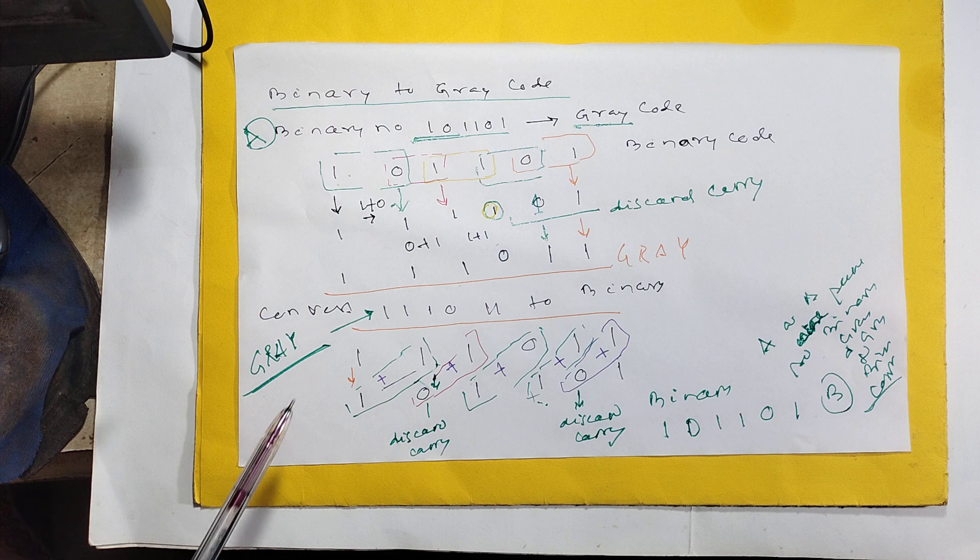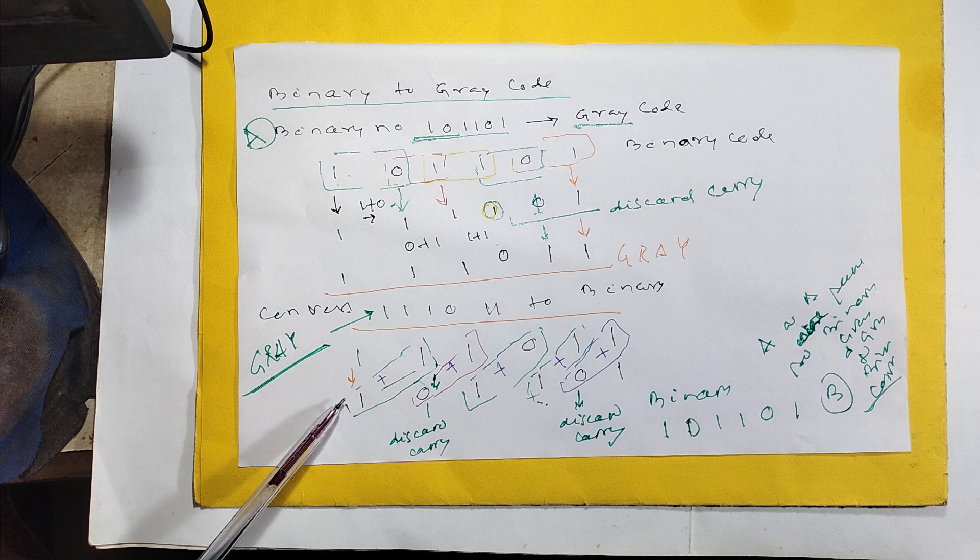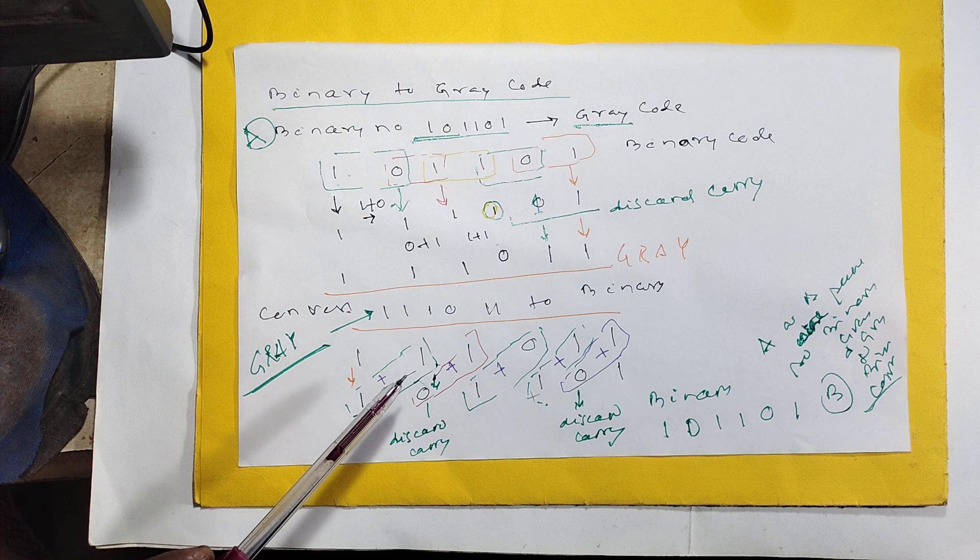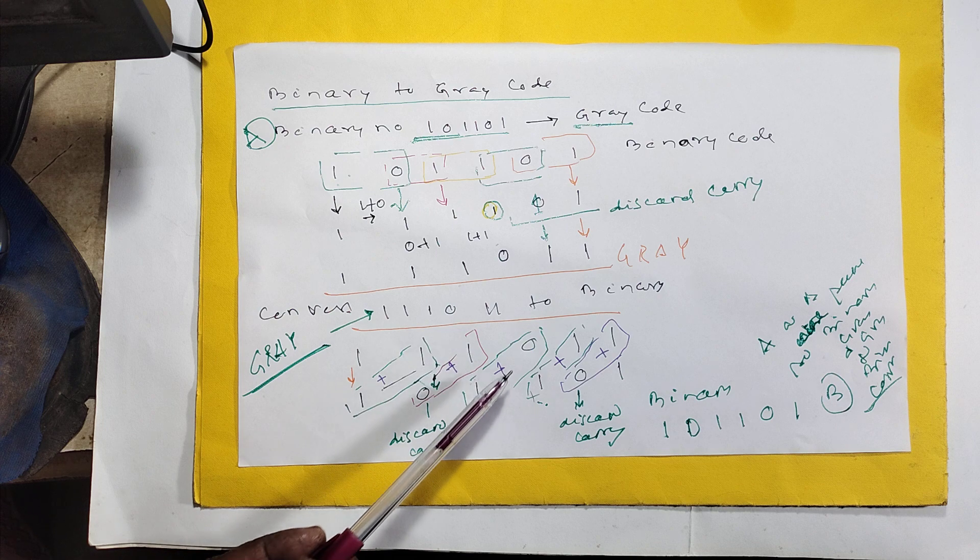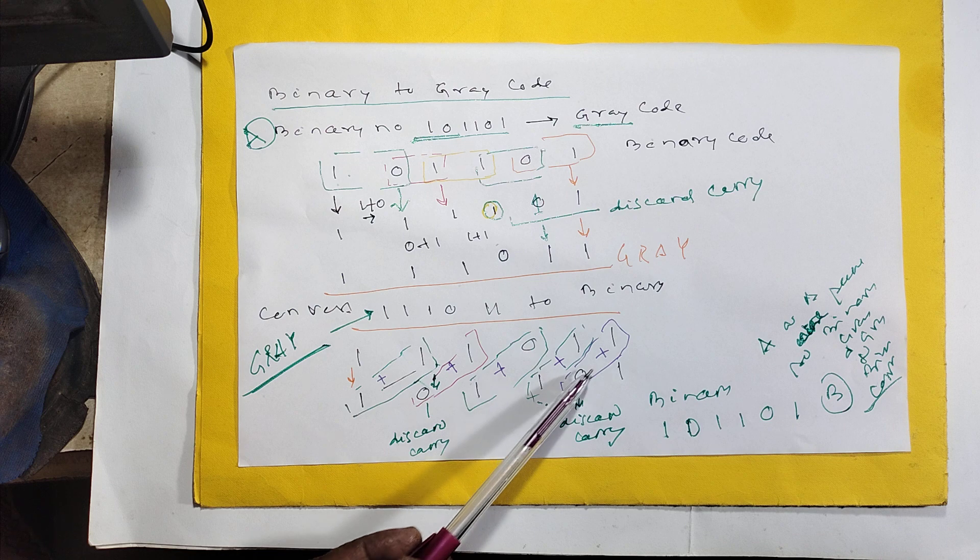Now how to binary? This 1 to 1, 1. This 1 to 1, this 1, mind it. This 1 to 1, 0, 10. But 0, you have to discard carry. 0, 1, 1. 1, 0, 1. 1, 1, 0. Discard carry. 0, 1, 1.